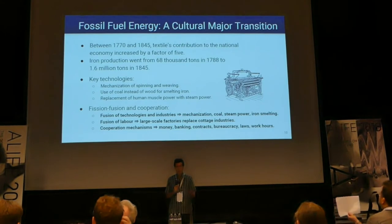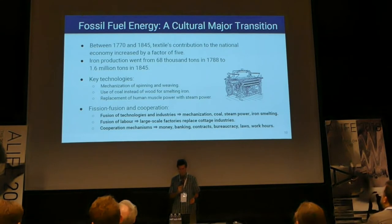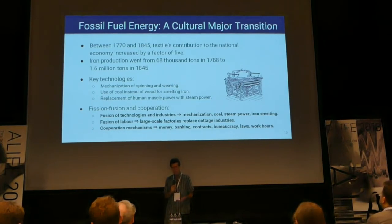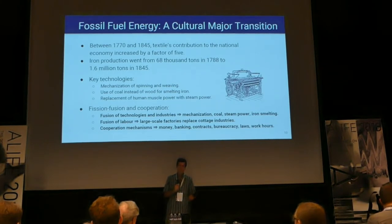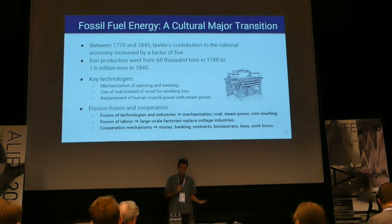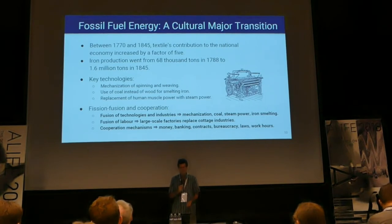These three technologies fused together. For example, using coal for smelting iron meant there was more iron available for making more complex machines with metallic gears. Muscle power was replaced by steam power, and steam engines used both iron and coal. So these three things all fused together to make the Industrial Revolution possible.